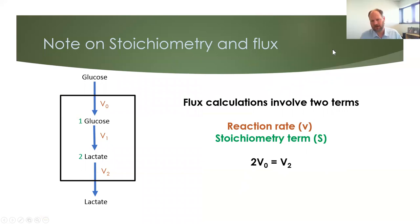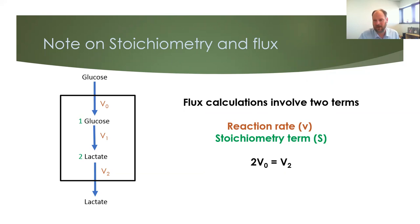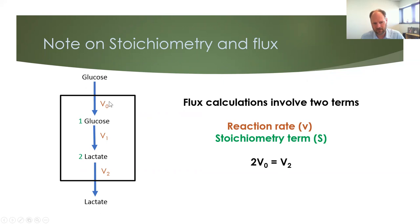A note on stoichiometry: up until this point we've only calculated networks where everything has a stoichiometry of one — one molecule converted into one other molecule. But there are many reactions where reactants have more than one stoichiometric relationship. For example, about 2.5 NADH are used for every ATP. In the familiar example where glucose comes in and becomes two lactates that are secreted, the lactate secretion rate would be V0 times 2 equals V2. So bear in mind that total flow is affected by both reaction rates and stoichiometry.